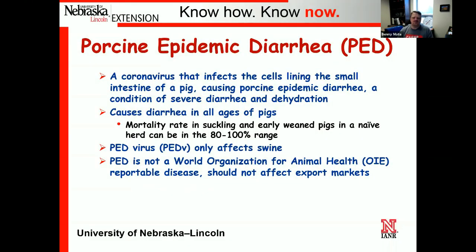To start with some of the diseases — PED, or porcine epidemic diarrhea. This is a coronavirus that affects the cells lining the small intestine of the pig, essentially causing nutrients not to stick to the intestines, so they just have diarrhea and everything goes straight through — severe diarrhea and dehydration. It causes diarrhea in pigs of all ages, but has an especially potent impact on suckling pigs, with a mortality rate in naive herds of anywhere in the 80 to 100% range. Very, very deadly for baby pigs still on the sow.